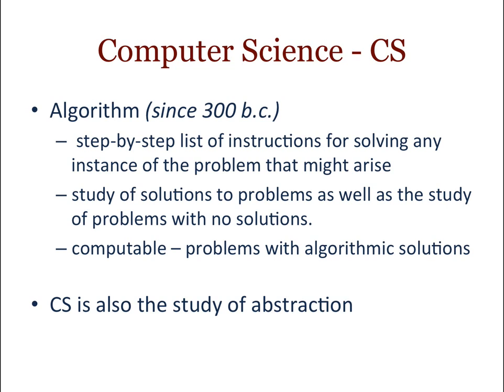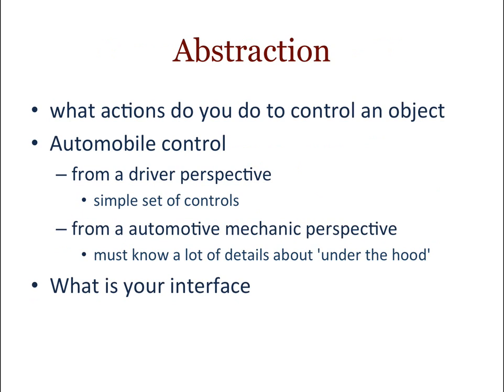Computer science is also the study of abstraction. A lot of what you do in programming is abstraction — rather than writing the specific steps for a computer, you rely on people who have written those steps and abstracted their work so you can use it easily with a simple interface. We're going to see there are two main types of abstraction. In object-oriented programming, you deal with everything as an object and you're interested in how you control that object.